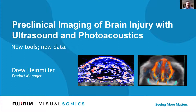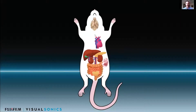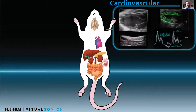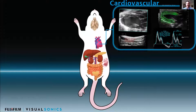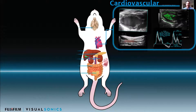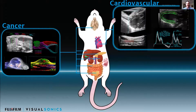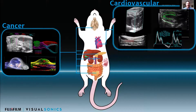Ultrasound and photoacoustics is a relatively new tool when it comes to imaging the brain in preclinical models, specifically small animals like rodents. There are a lot of different applications, primarily cardiovascular applications — being able to do assessments of cardiovascular function, strain, and blood velocity.